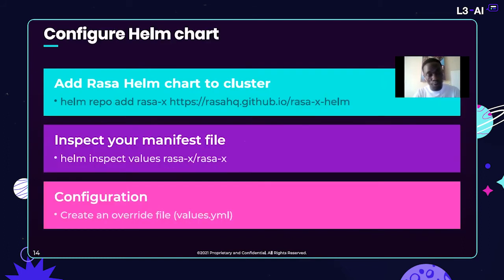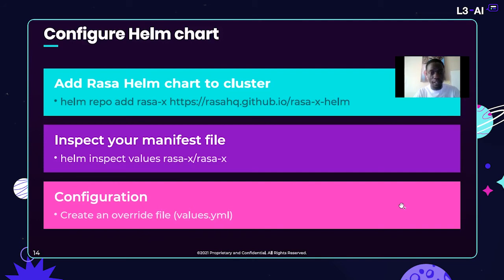To configure HelmCharts — which is documented in the Rasa docs — you can add the Rasa HelmCharts to the cluster using the provided command. You can also inspect your manifest file, which contains all the deployment requirements. If you want to do some configuration, you need to create an override file to adjust the credentials.